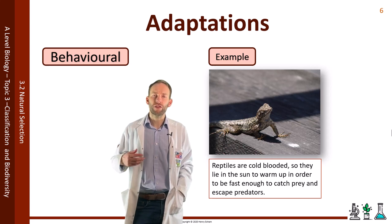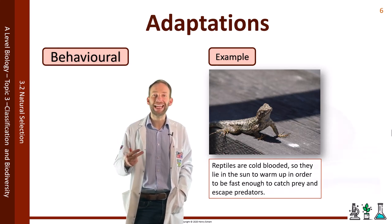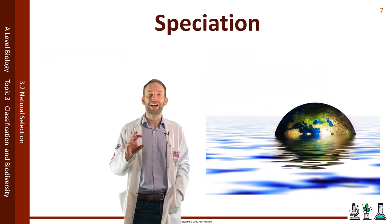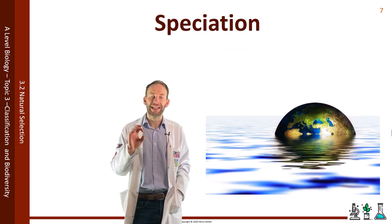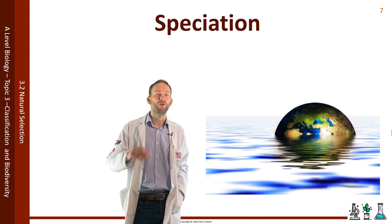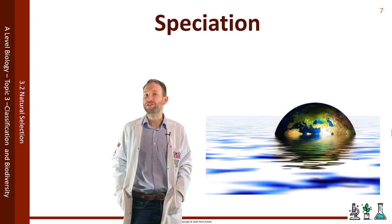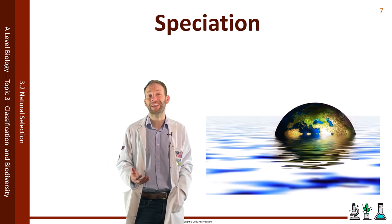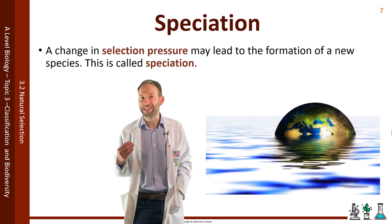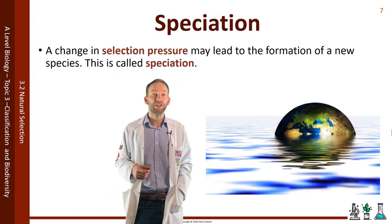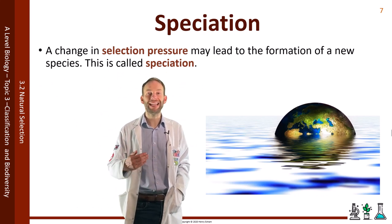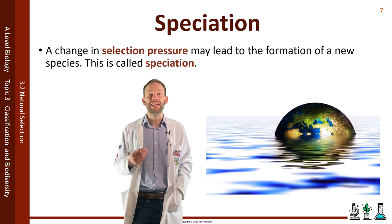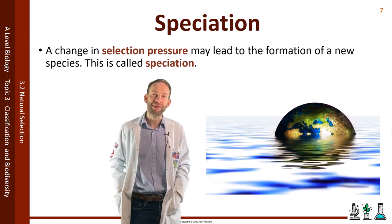So those three categories — anatomical, physiological and behavioural — go together to form the ecological niche of that organism. Sometimes conditions change and those adaptations may not be successful anymore, and we say there is now a different selection pressure. Natural selection will continue and it may lead to the formation of an entirely new species — a process called speciation.